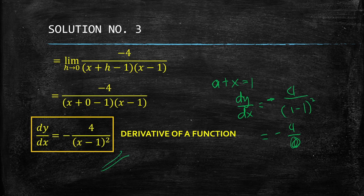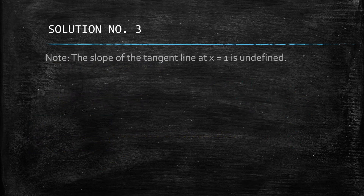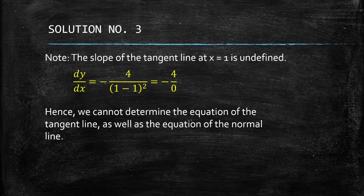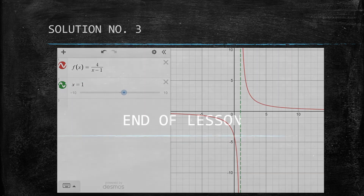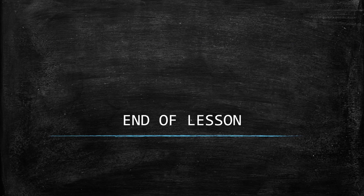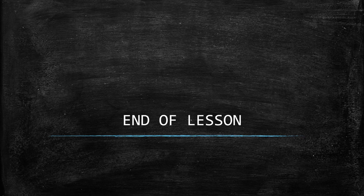We can use the derivative formula to find the slope of the tangent line and normal line at valid points, and proceed to find their equations. That's the end of this lesson. In the next part — lesson eight part two — we'll cover the basic differentiation rules, which are shortcuts for solving the derivative of a function. See you in the next video!